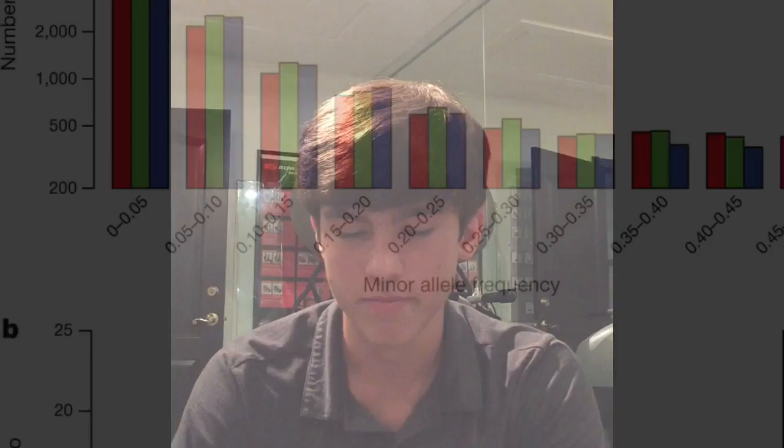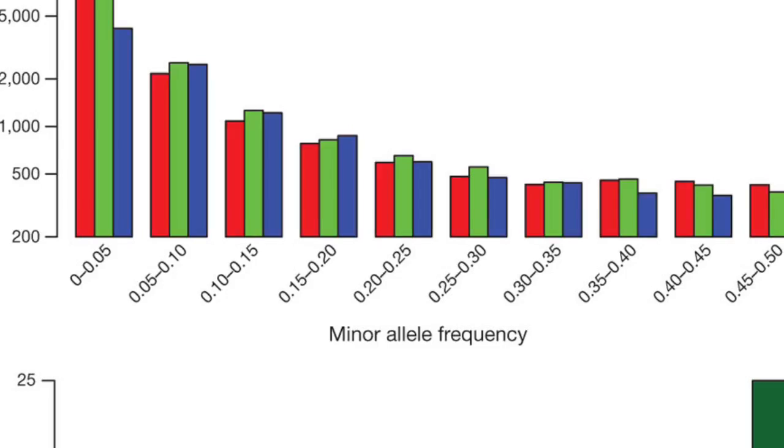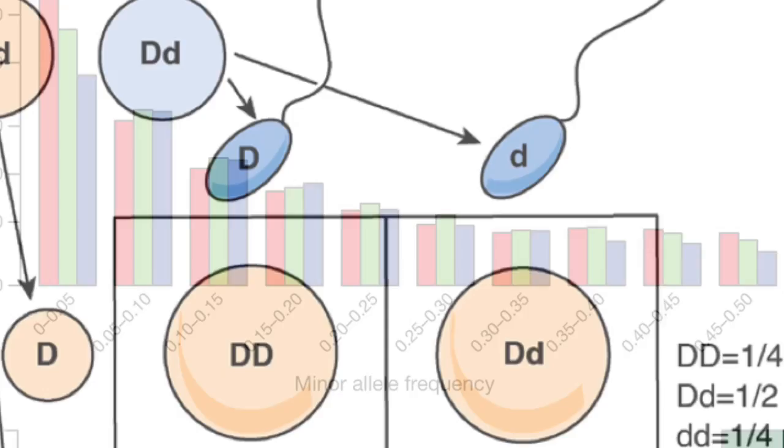How is evolution defined in genetic terms? Evolution in genetic terms involves the change in the frequency of alleles in a population over time. A gene pool includes all the genes, including all the different alleles for each gene, that are present in a population at any one time. The three sources of genetic variation are mutation, genetic recombination during sexual reproduction, and lateral gene transfer. Allele frequency is the number of times an allele occurs in the gene pool compared with the number of alleles in that pool for the same gene.